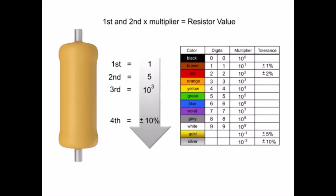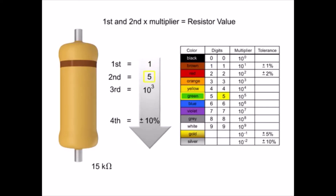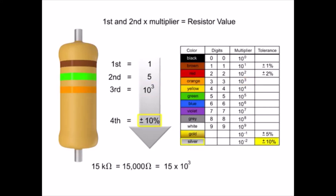Now, let's determine what the bands would be on a 15 kilo-ohm resistor. Since the first digit is 1, the first band would need to be brown. The second digit is 5, so the band color would need to be green. The resistor value is 15,000 ohms, so we need to add three zeros to 15. Three zeros is a thousand, so we need a multiplier of 10 to the third. Thus, the third band would need to be orange. The last band would need to be silver to indicate that the resistor has a tolerance of plus or minus 10%.